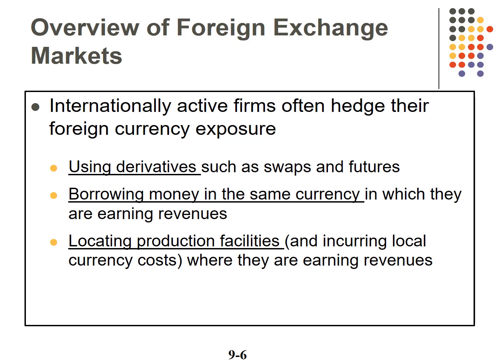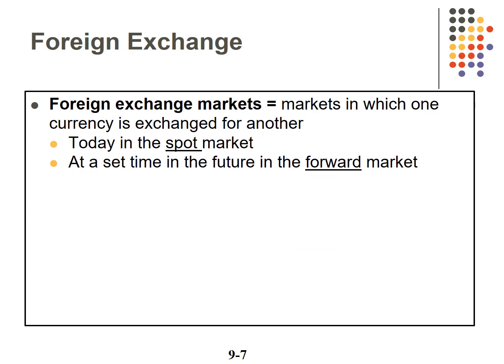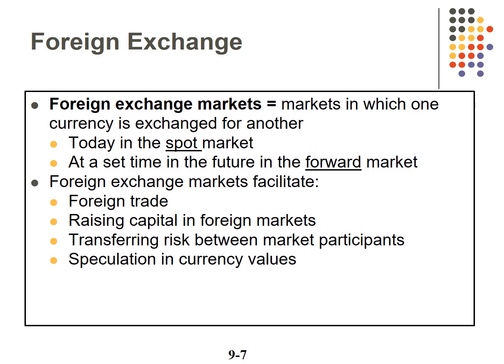With the risk of foreign exchange rates moving against a firm, they need to take steps to hedge their risk. They can use derivatives, coming up in Chapter 10. They can borrow in the same currency in which they're earning revenue, or locate facilities where they earn the revenue. This brings us to the foreign exchange markets — the markets where one currency is exchanged for another. Two markets: the spot market for immediate exchange (really within two to three days), and the forward market for future exchange. Foreign exchange markets facilitate foreign trade, raising capital in foreign markets, hedging to transfer risk, and some traders also speculate in foreign exchange.